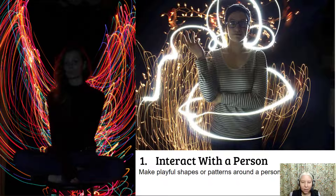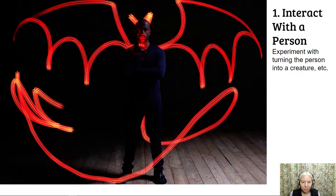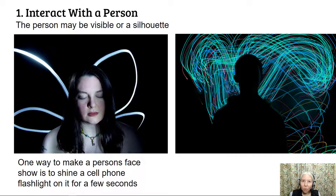Here are four ideas to experiment with. Number one: interact with a person. Make playful shapes or patterns around a person. In the first example it looks like those are bird wings or angel wings, and the other one is more of a random pattern circulating around the person. Here is an example of interacting with a person by turning him into a creature. Your person may be visible or a silhouette — in the first photo there are fairy or butterfly wings behind the person, and their face is visible because someone shone a cell phone light onto the face for a few seconds. In the other example you can see it's a silhouette, which also looks really interesting.